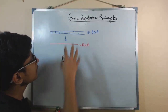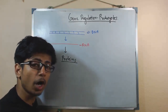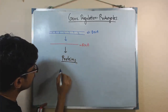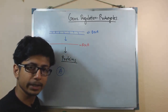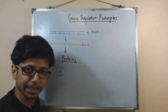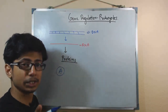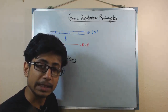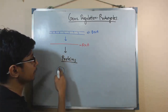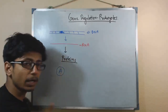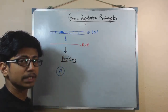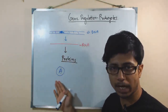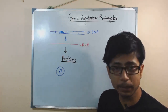Gene regulation is the process of regulating the expression of certain genes present in DNA that will finally make the protein. For example, protein A is only required when the bacteria needs to break down lactose. So if lactose is present and the bacteria wants to break it down, only then will it express the gene for protein A — the enzyme that breaks down lactose.